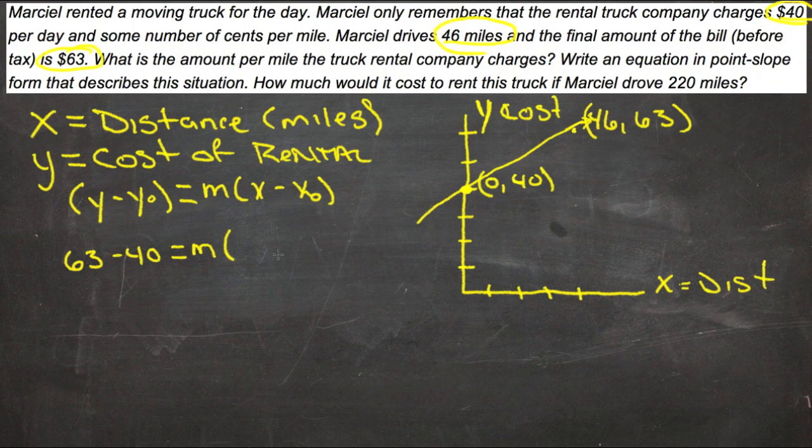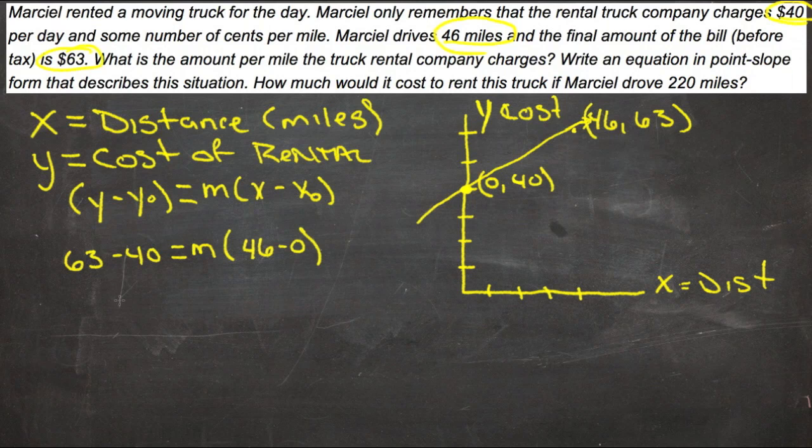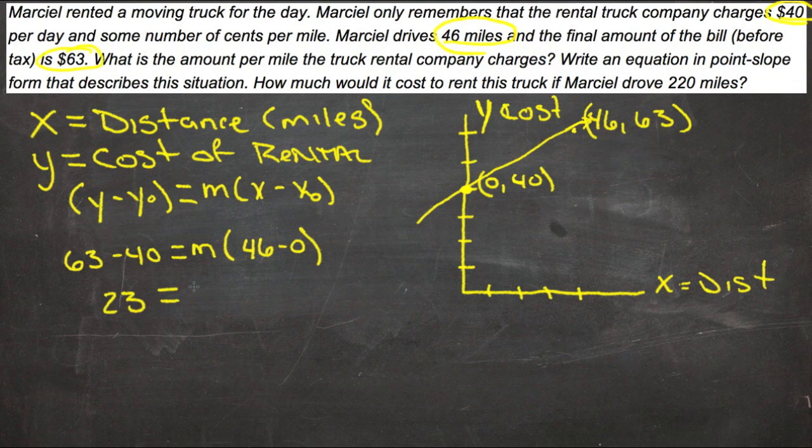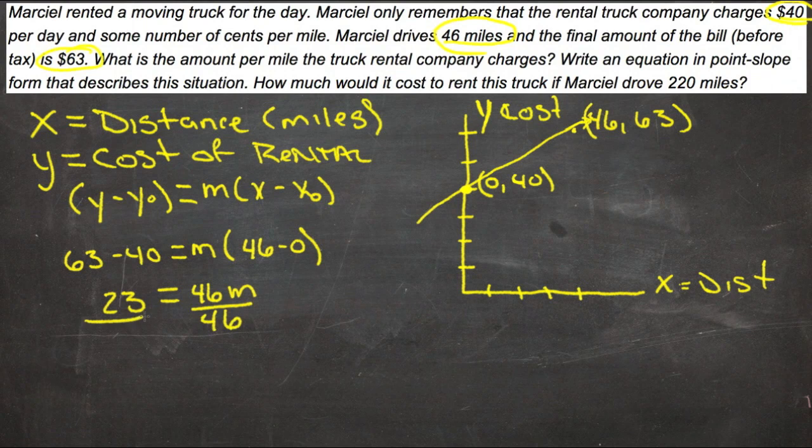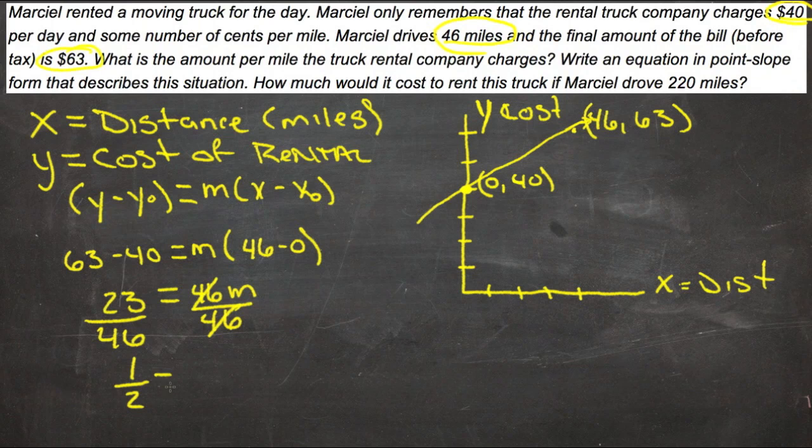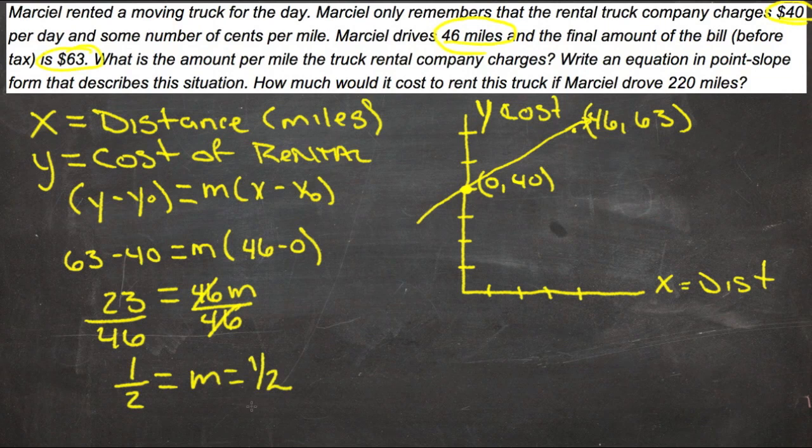We'll do our subtraction and we have 23 equals 46m. Then we can divide both sides by 46. 23 divided by 46 is 1/2, so m is 1/2.